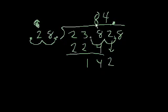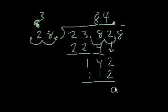4 times 8 is 32. And 4 times 2 is 8, plus 3 is 11. 2 minus 2 is 0. 4 minus 1 is 3. Interesting. So it turns out that my remainder here is larger than 28.